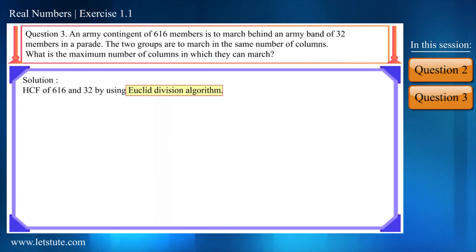Here we can use the Euclide division algorithm. Now here we can see that 32 is smaller than 616. Therefore, we will consider this as a dividend and this as a divisor and we will write this in a division format. And we will try to find the HCF by using Euclide division algorithm.